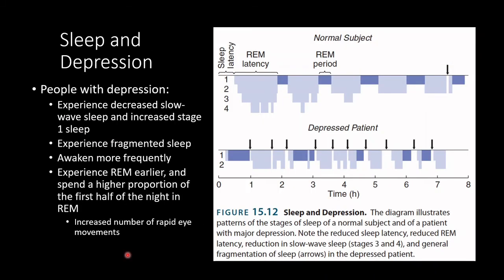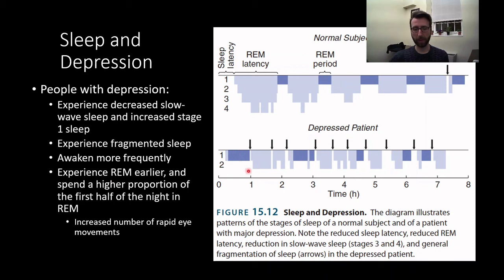Some folks with depression experience disrupted sleep. People with depression tend to experience decreased slow wave sleep and increased stage one sleep; their sleep is more fragmented and they awaken more frequently. They also tend to experience REM sleep earlier and spend a higher proportion of the first half of the night in REM — similar to REM rebound. Looking at a sleep stage chart, a normal subject moves through the expected pattern from light to heavy sleep and up to REM throughout the night, spending more time in REM as the night wears on. By contrast, the depressed patient spends much more time in REM very early and shows fragmented, disrupted sleep, never quite reaching slow wave sleep. They're simply not sleeping normally or feeling well-rested.